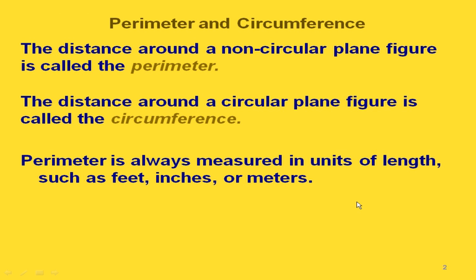We have both perimeter and circumference. They both mean the distance around a figure. The distance around a non-circular figure is called the perimeter. The distance around a circle is called the circumference. Perimeter is always measured in units of length, such as feet, inches, or meters.